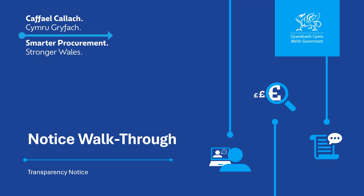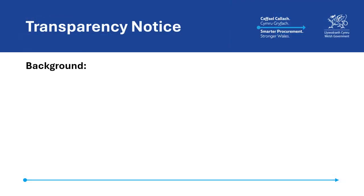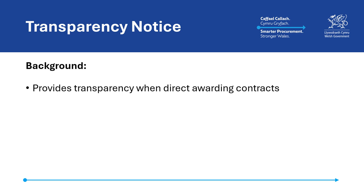In this video we will be taking you through the transparency notice, giving some background on when and how the notice is to be used and what information needs to be included when publishing one. The transparency notice is required to provide transparency on contracts intended to be awarded under direct award provisions in the Procurement Act. The function of the transparency notice is to inform the markets that a contracting authority intends to direct award a contract and to ensure that there is transparency relating to this decision.